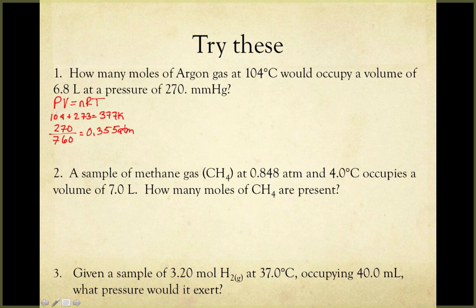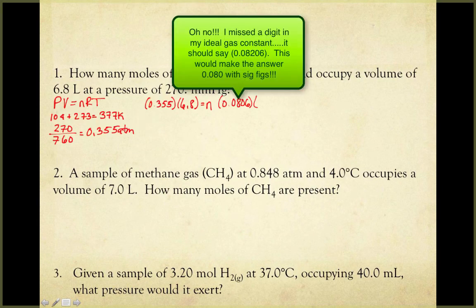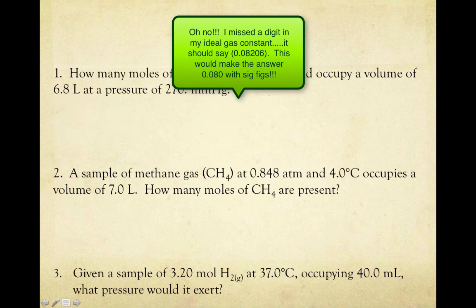Now with everything in proper units, I can solve the problem. Plugging in pressure = 0.355 ATM, volume = 6.8 liters, solving for n (moles), using the gas constant R, and T = 377 K, I find that we have 0.079 moles of argon.